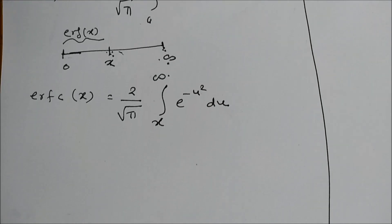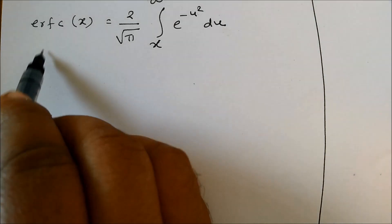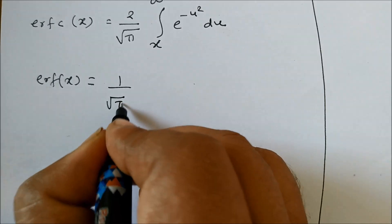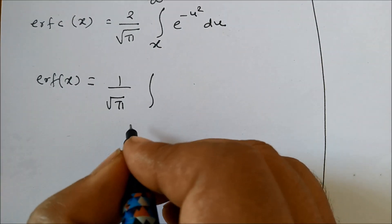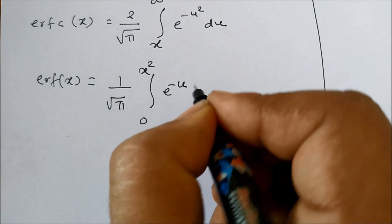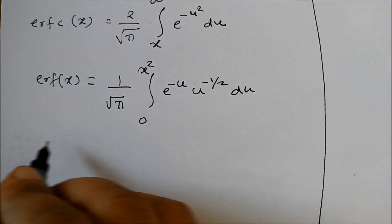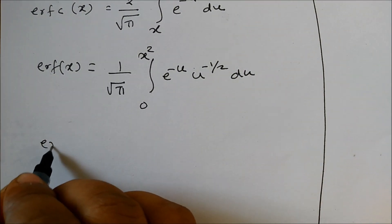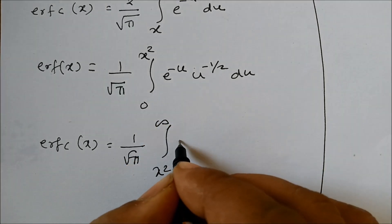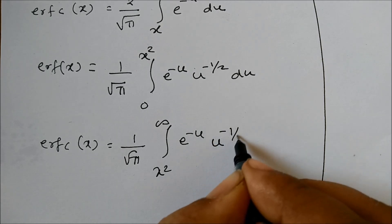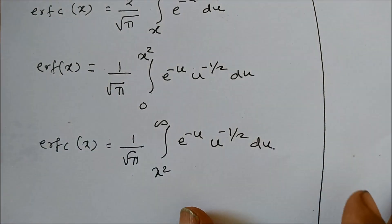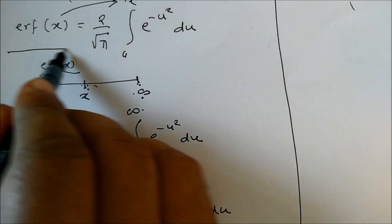There are also alternate definitions available for the error function. The alternate definition of erf(x) is 1 divided by the square root of pi, times the integral from 0 to x squared of e to the power minus u, times u raised to minus one half, du. Similarly, the complementary error function erfc(x) is 1 divided by the square root of pi, times the integral from x squared to infinity of e to the power minus u, times u raised to minus one half, du.